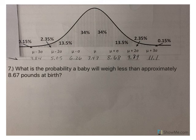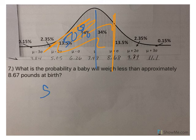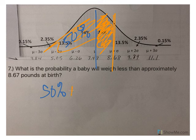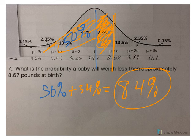Number seven: what is the probability a baby will weigh less than approximately 8.67 pounds at birth? This is approximately 8.67. When it says less, we're going to go this way. Remember that when you cut the normal distribution in half, each side is 50%. So I've got the left 50% plus this 34%. So less than 8.67 would be approximately 84%. So 84% of babies born should weigh less than 8.67 pounds at birth.